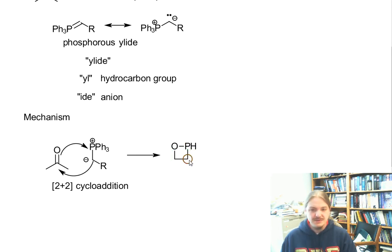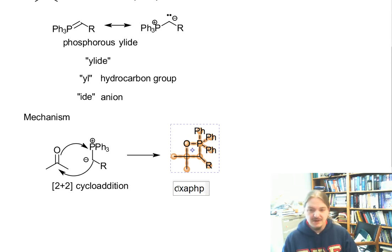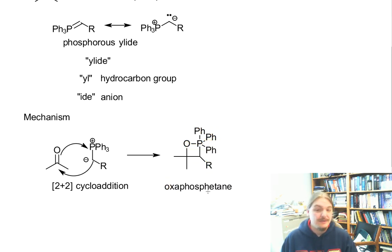Because this is a 2 plus 2 cycloaddition, we get this cyclic intermediate, and this thing's called an oxaphosphetane. For everybody who is keeping track of wacky organic names, oxaphosphetane, where the tane suffix is a symbol of a four-membered ring ether.